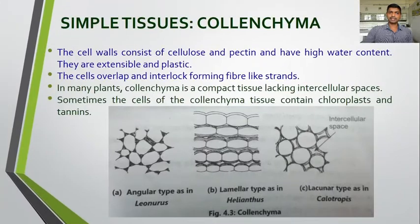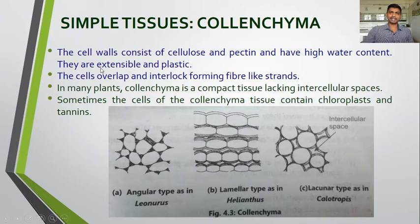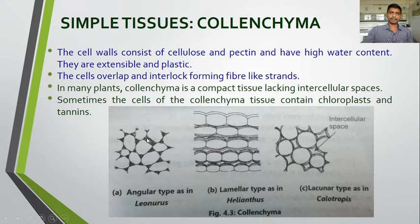Furthermore, the cell walls consist of cellulose and pectin and have high water content. These cells are now permanent and have high water content. They are extensible and plastic — they can extend, having plasticity. The cells overlap and interlock forming fiber-like strands. In many plants, collenchyma is compact tissue lacking intercellular spaces, and if intercellular spaces are present they are filled with the deposition of cellulose and pectin. Sometimes the cells of the parenchyma tissue contain chloroplasts and tannins. If collenchyma tissue contains chloroplasts, it is called chlorenchyma.